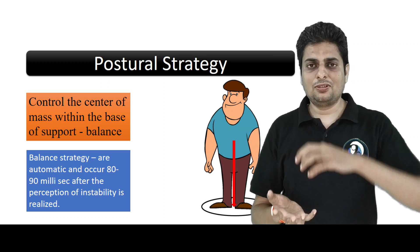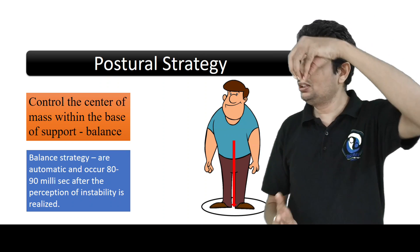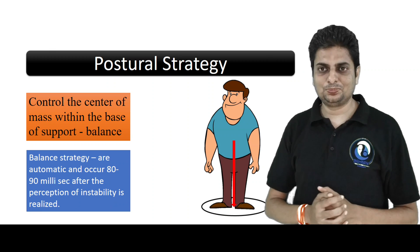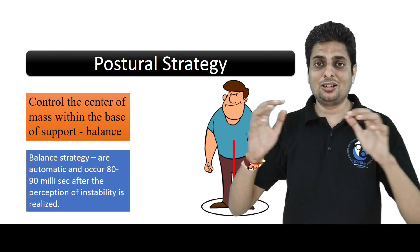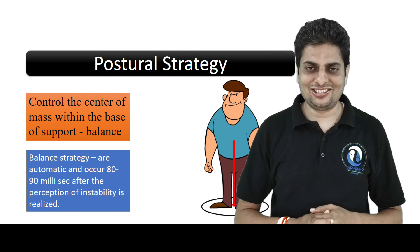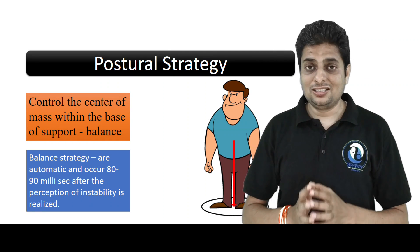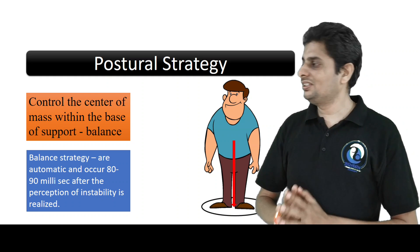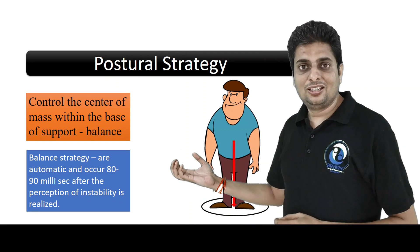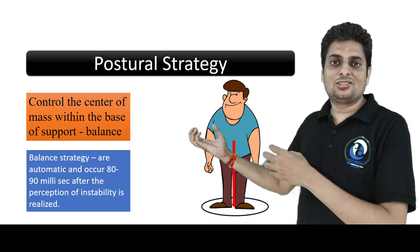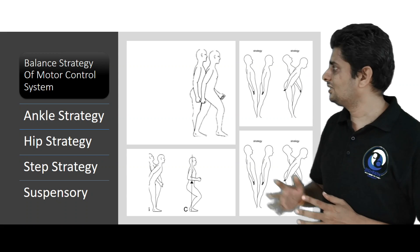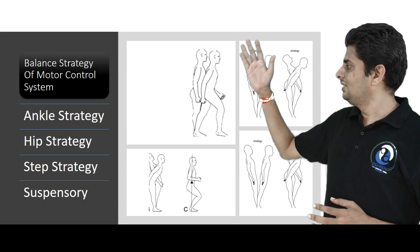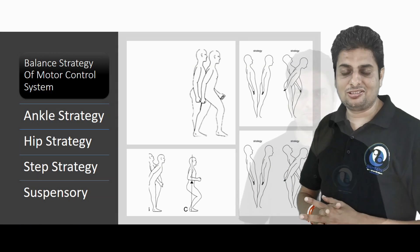To acquire and maintain an erect posture, our center of mass must remain within the base of support. This is fulfilled by our motor control system via balance strategies. These strategies are automatic, occurring within 80 to 90 milliseconds after a threat of instability is perceived. We are familiar with the three strategies: ankle strategy, hip strategy, step strategy, and suspensory strategy.